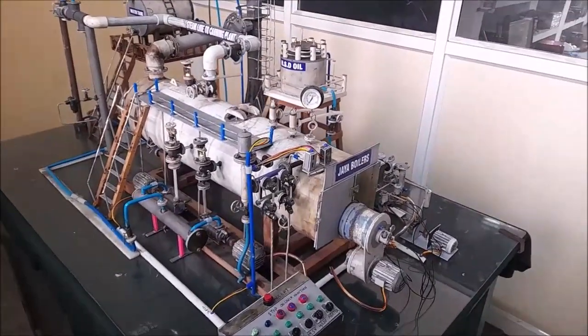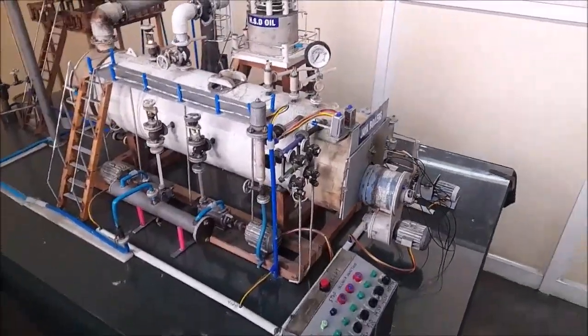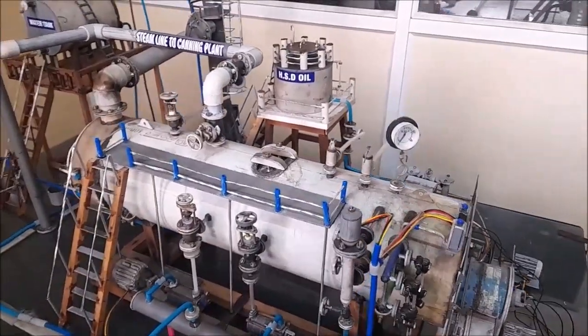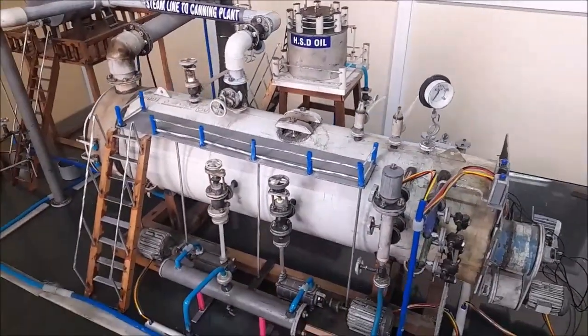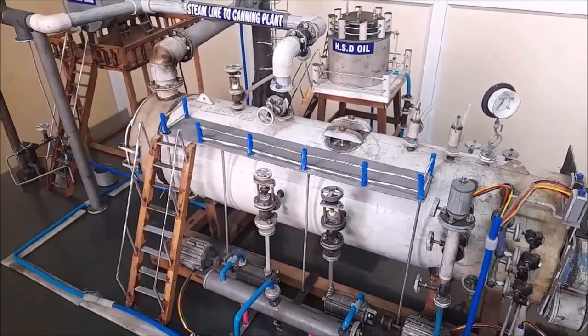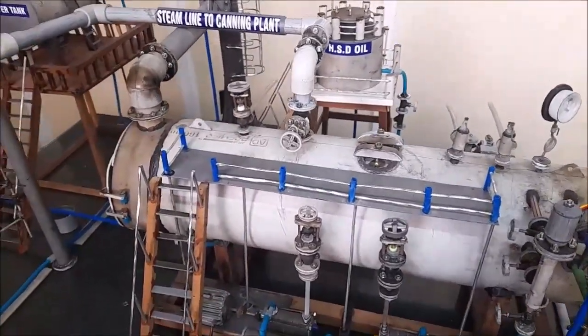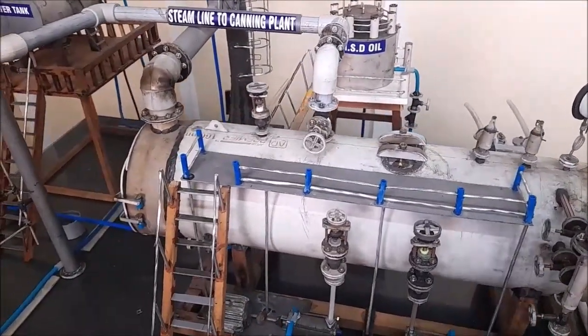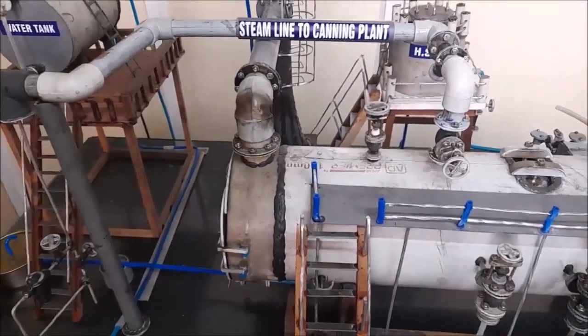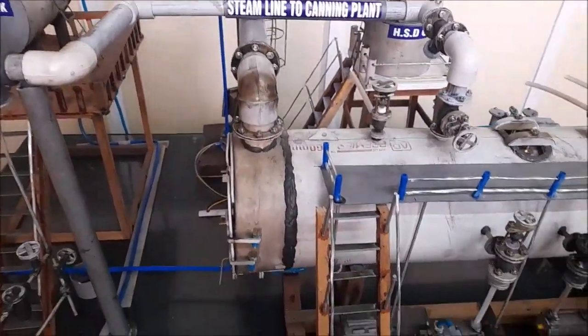First, let us see what is a boiler. A vessel exceeding 22.75 liters of water or 5 gallons of water and generating steam is considered a boiler, and includes fittings and other mountings attached to such a vessel which is wholly or partially under pressure when it is shut over. This is the boiler.